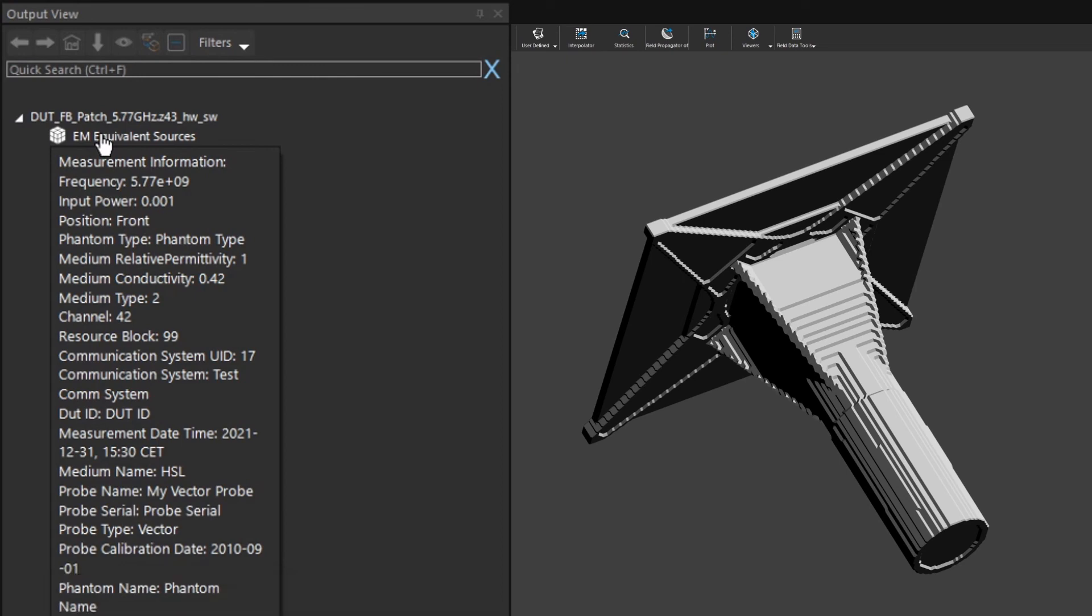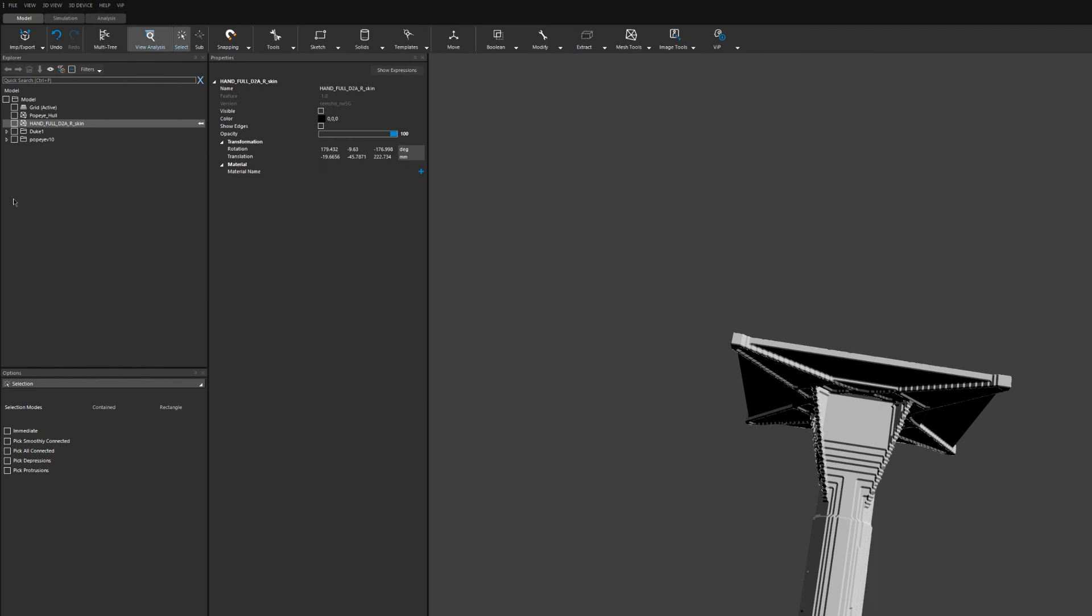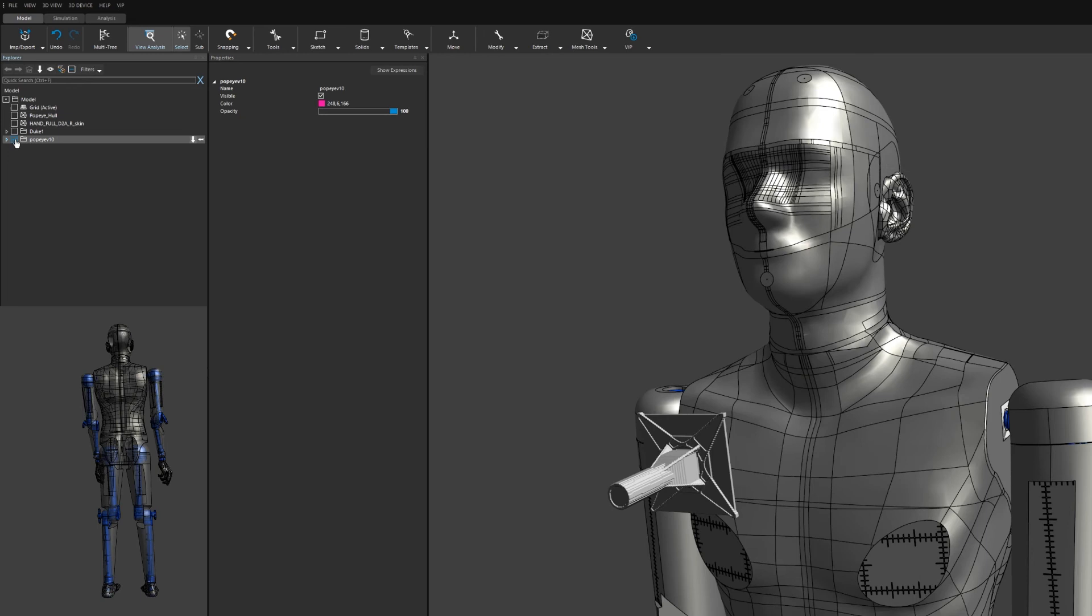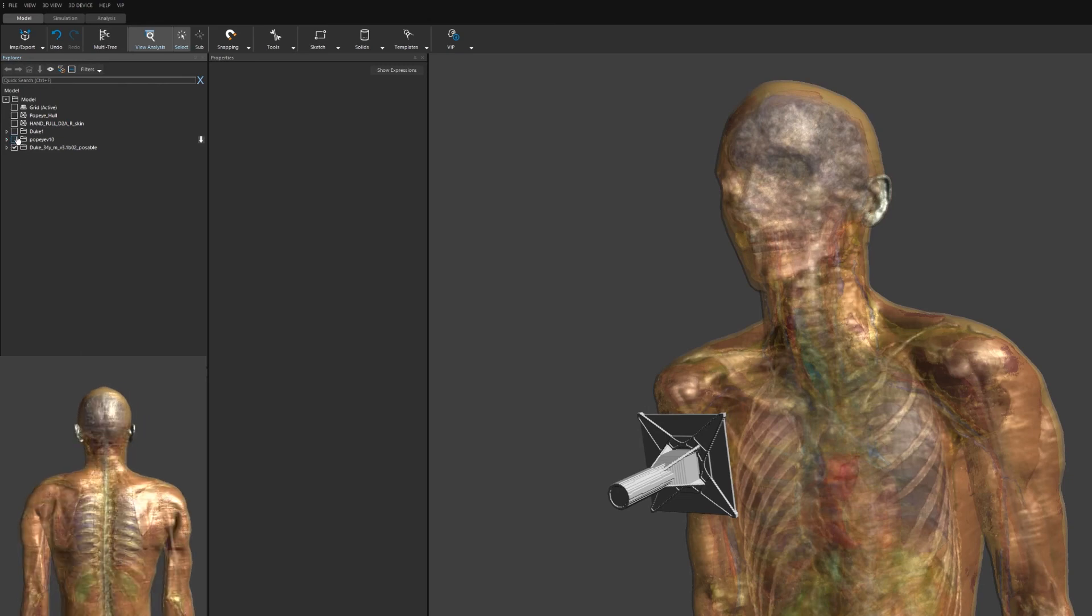For example, I can place my DUT in different virtual scenarios next to a hand phantom, next to a full body phantom, next to a high resolution anatomical model such as Duke.